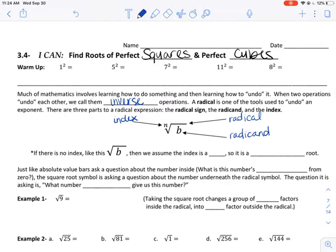If there is no index, so no number is written, then we assume the index is a 2, so it is a square root. You don't ever have to write a 2 on your square roots.